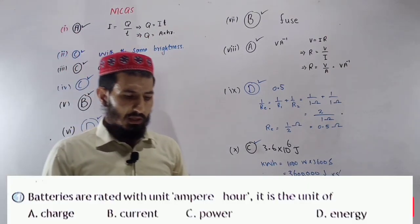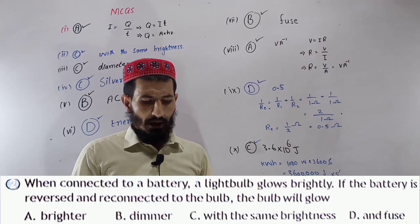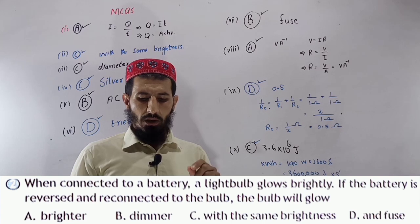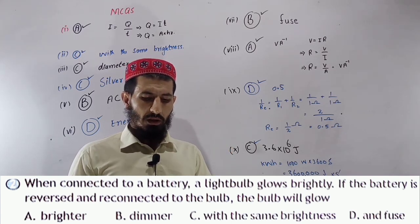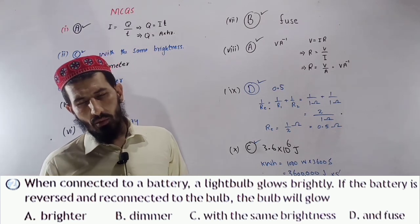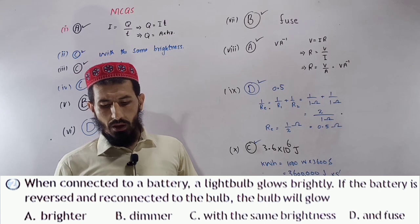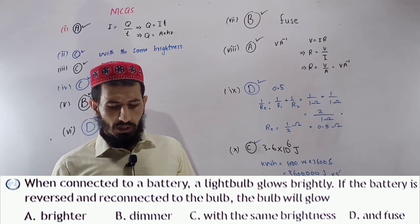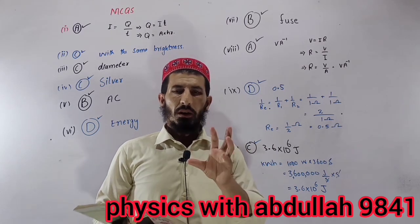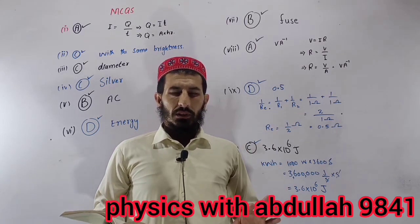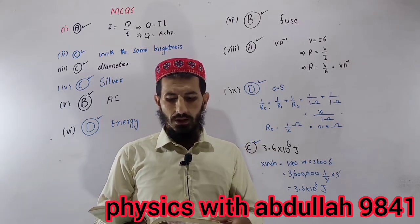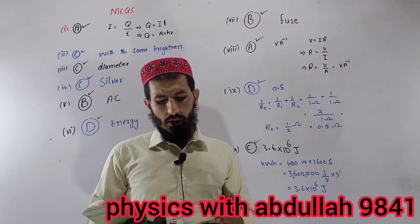Option number A is correct. Next question: when connected to a battery, a light bulb glows brightly. If the battery is reversed and reconnected to the bulb, the bulb will glow with the same brightness. The answer is option C, with the same brightness. The bulb's glow depends on power, not on which terminal is positive or negative.